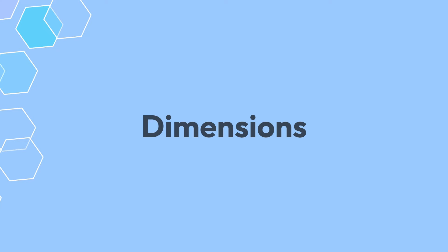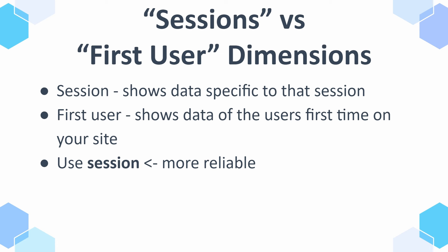Speaking of dimensions, let's dive into these because this is where it gets more interesting as you can really customize them. Let's start by discussing two types of dimensions: session and first user. The session shows data specific to that session, whereas first user shows data of the user's first time on your site. So if a person comes many times, session will show the latest session's information, whereas first user will always show whatever happened in the first session.